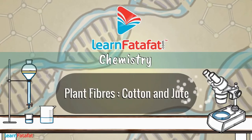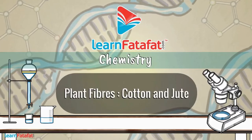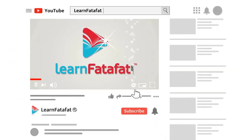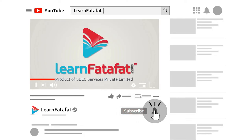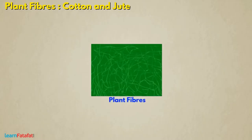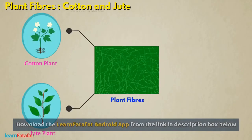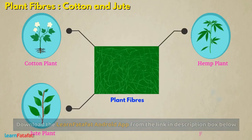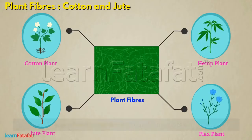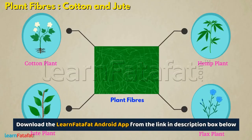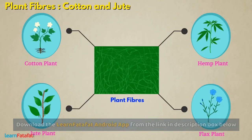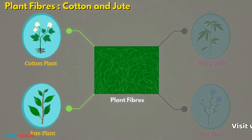Plant Fibers: Cotton and Jute. We obtain plant fibers from plants such as cotton, jute, hemp, flax, etc. In this video, we will understand more about cotton and jute fibers.